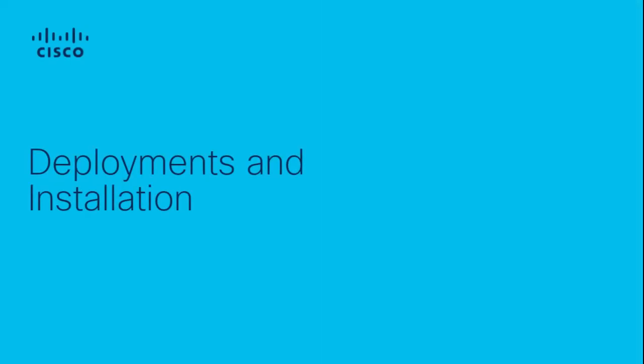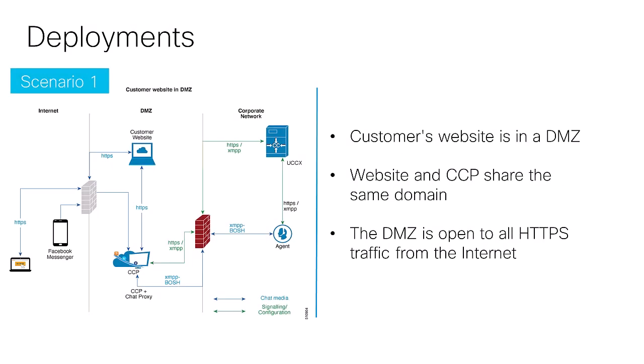It's important to understand the deployments we are working with before implementing any new features. This is the first deployment scenario for chat and email. The most notable difference is when the customer's website is in a DMZ or limited zone. This scenario allows it to be open to all HTTPS traffic from the internet, and also requires that the CCP and the customer's website share exactly the same domain.